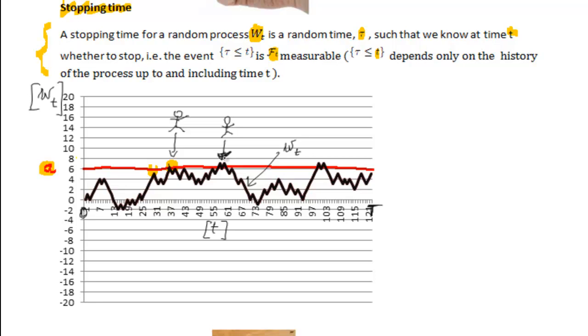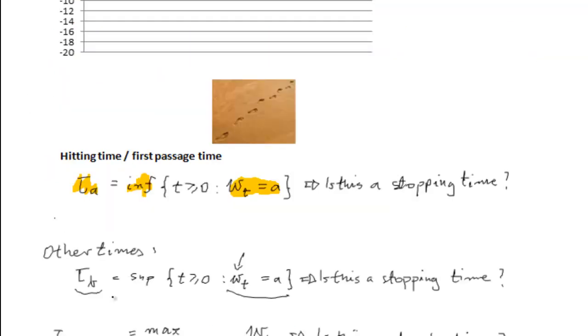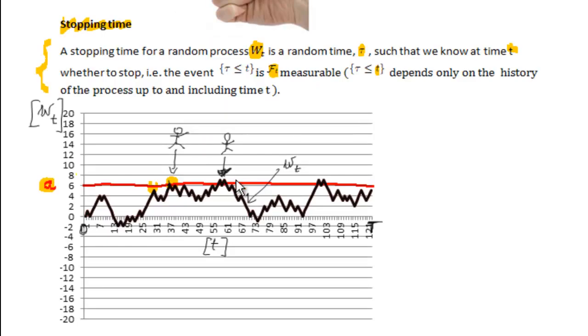But in this case, obviously, our process will hit level A at some future point of time. All that's to say that tau B is not a stopping time. Because for us to decide whether this is the last time that we hit level A would require us to look into the future. But unfortunately, you will then violate the definition of a stopping time, which says that you can only use information up to and including time t.